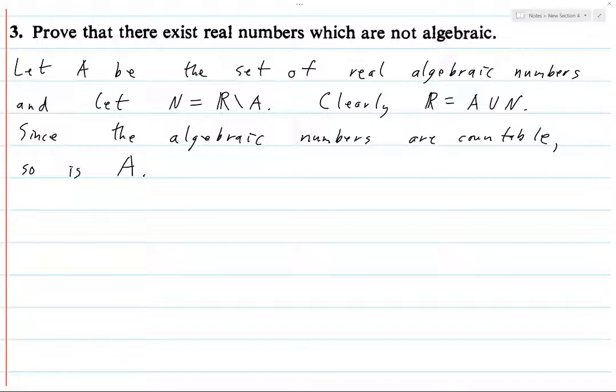Well, countable, typically when you say countable, you allow for things to be finite as well, because it makes things a lot easier. Typically, in a lot of these types of proofs, the difference between finite and countable isn't that great. It's really the uncountable where you sort of treat things which are finite and countable similarly. But yeah. So, since the algebraic numbers are countable, so is A.